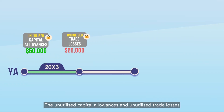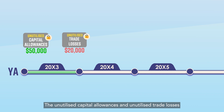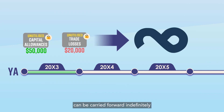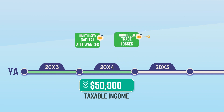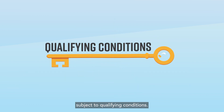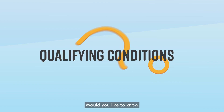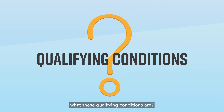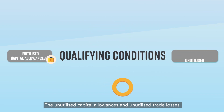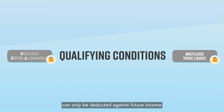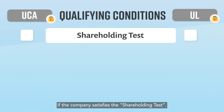The unutilised capital allowances and unutilised trade losses can be carried forward indefinitely and deducted against future income, subject to qualifying conditions. The unutilised capital allowances and unutilised trade losses can only be deducted against future income if the company satisfies the shareholding test.